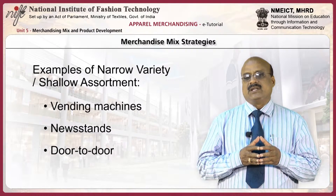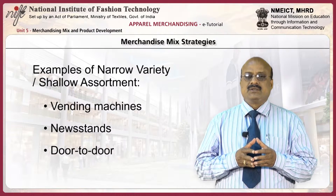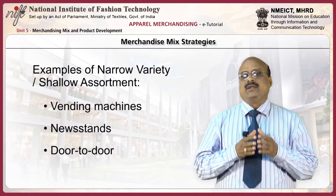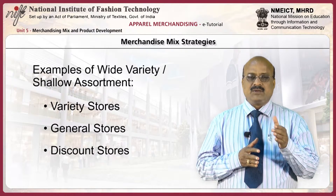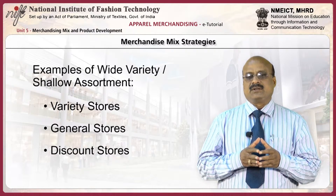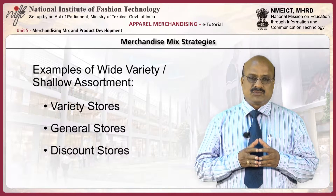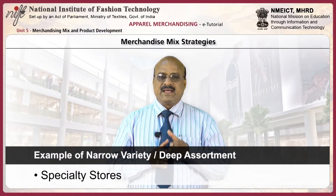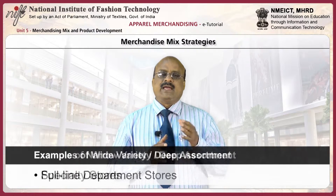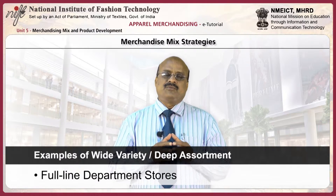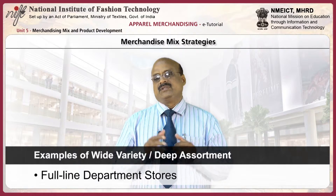Examples of narrow and shallow assortment are vending machines, news stands, and door-to-door sales. Examples of wide and shallow assortments are variety stores, general stores, and discount stores. Examples of narrow and deep assortments are specialty stores. Examples of wide and deep assortment are full line department stores.